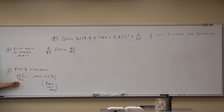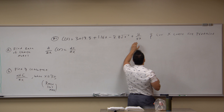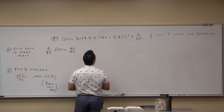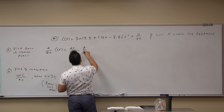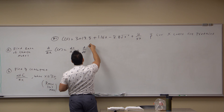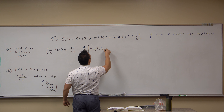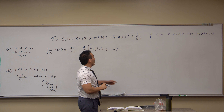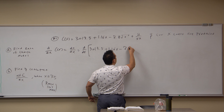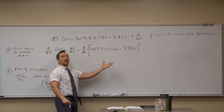Part B will ask us to find and interpret DC/DX when X equals 75, but first let's calculate DC/DX using the power rule. I'll rewrite the function — notice I can write the D/DX of 3019.5 plus 1.16X minus 7.8 times the square root of X. I'm going to change that square root of X to X to the one-half so that I can apply the power rule appropriately.